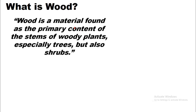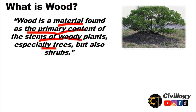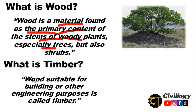First of all, what is wood? Wood is a material found as the primary content of stems of woody plants, especially trees but also shrubs. What is timber? Timber is wood suitable for building or other engineering purposes. Our main concern will be timber because the wood used for building or engineering purposes is called timber.